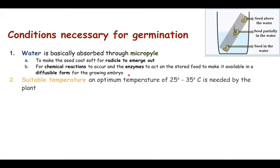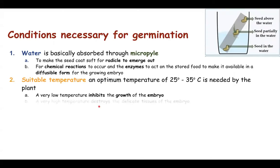The suitable temperature required for germination is 25 to 35 degrees Celsius. This temperature ensures all enzymatic activities occur at a proper rate. If temperature is too high or too low, the rate of germination is affected and may not occur at all. A very low temperature will inhibit the growth of the embryo, whereas a very high temperature will destroy the delicate tissues of the embryo.